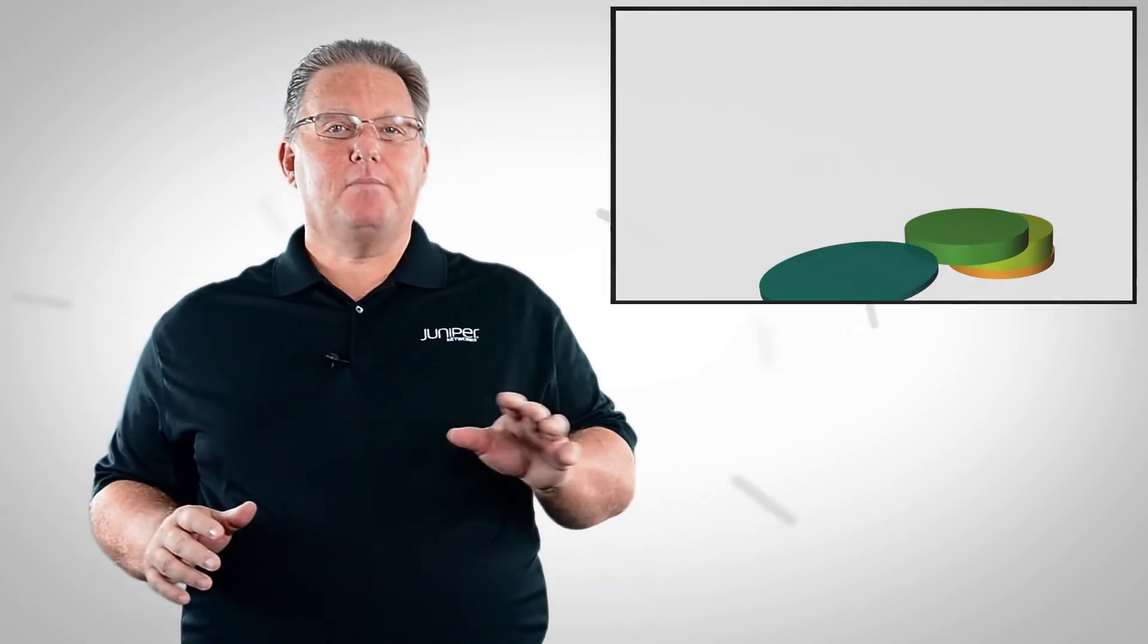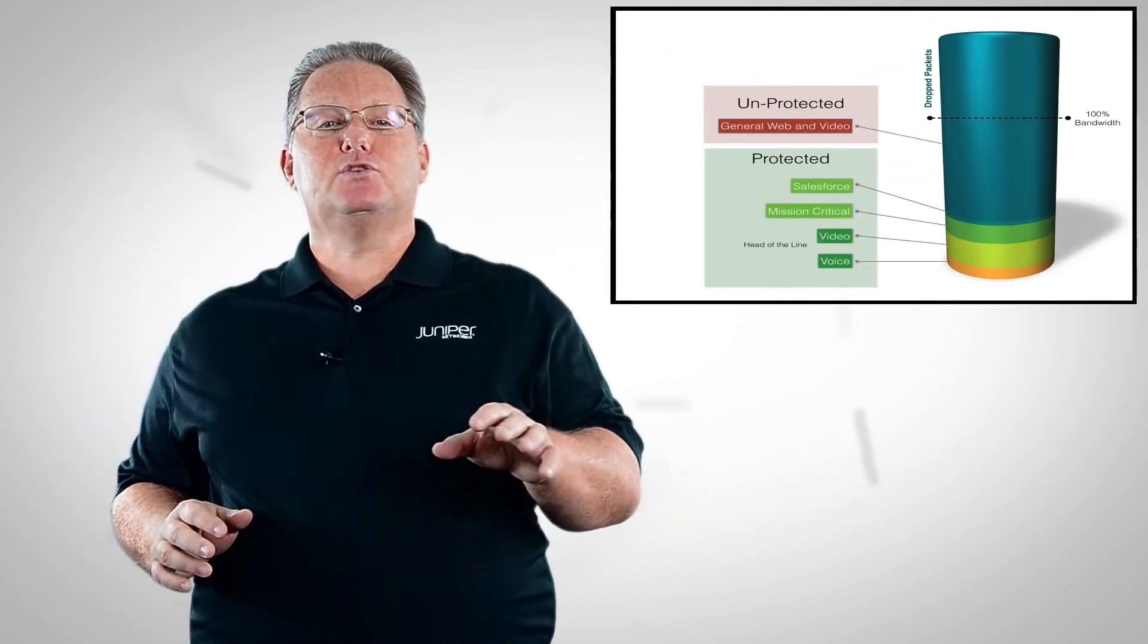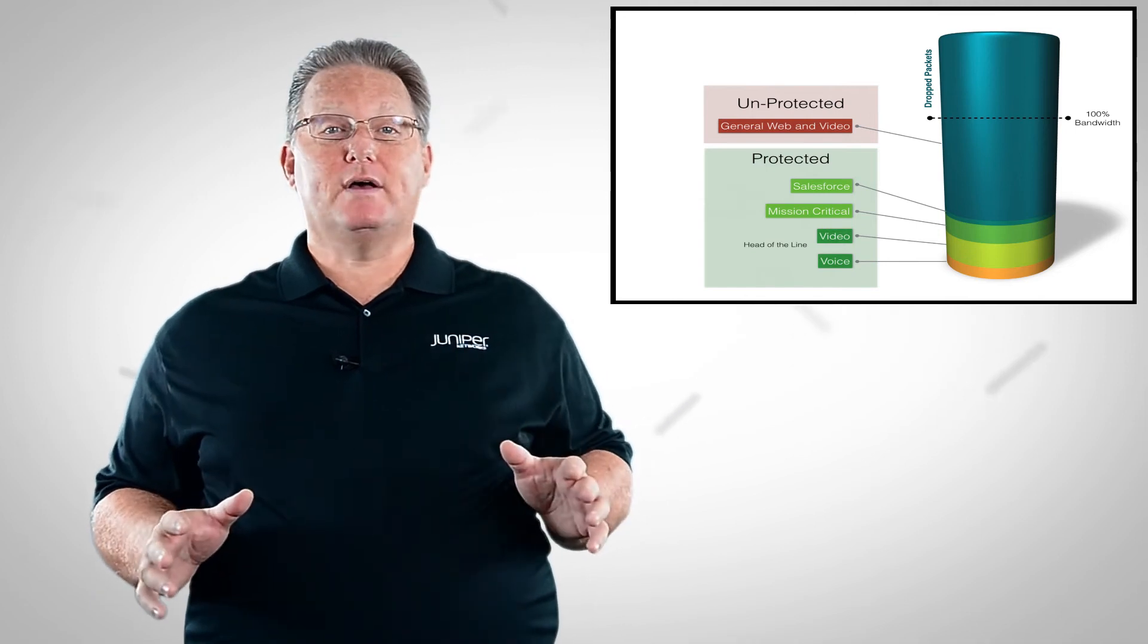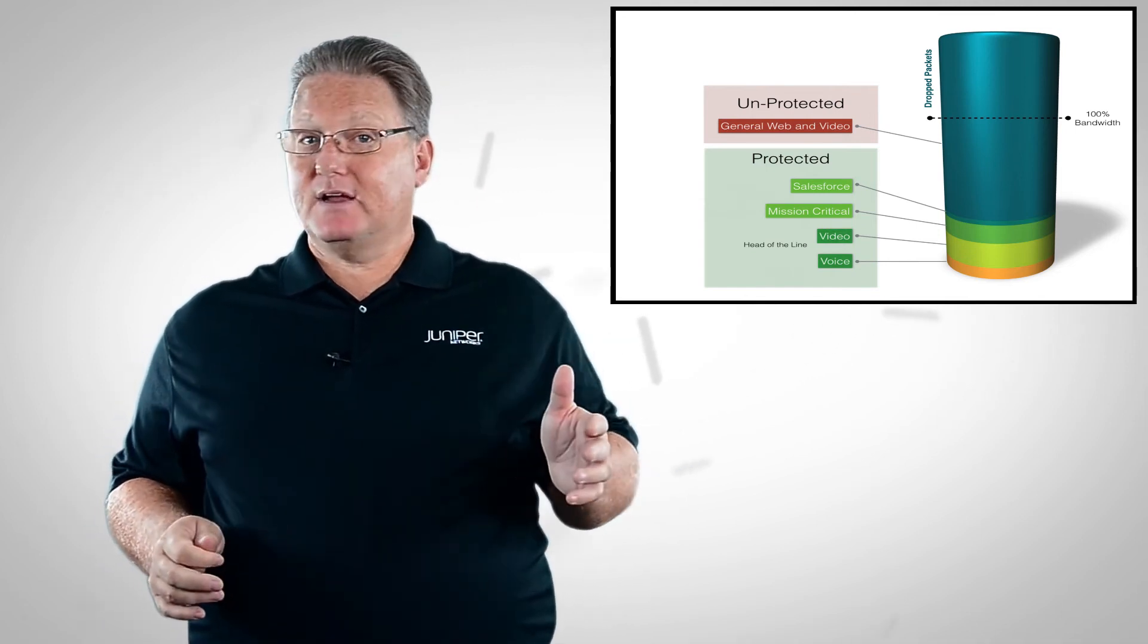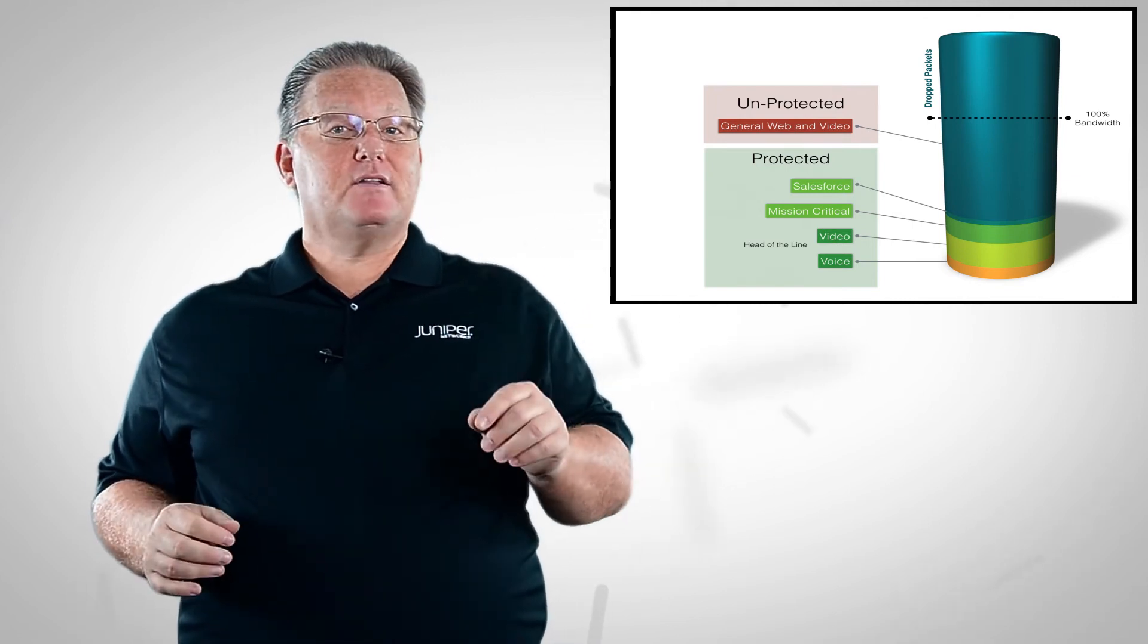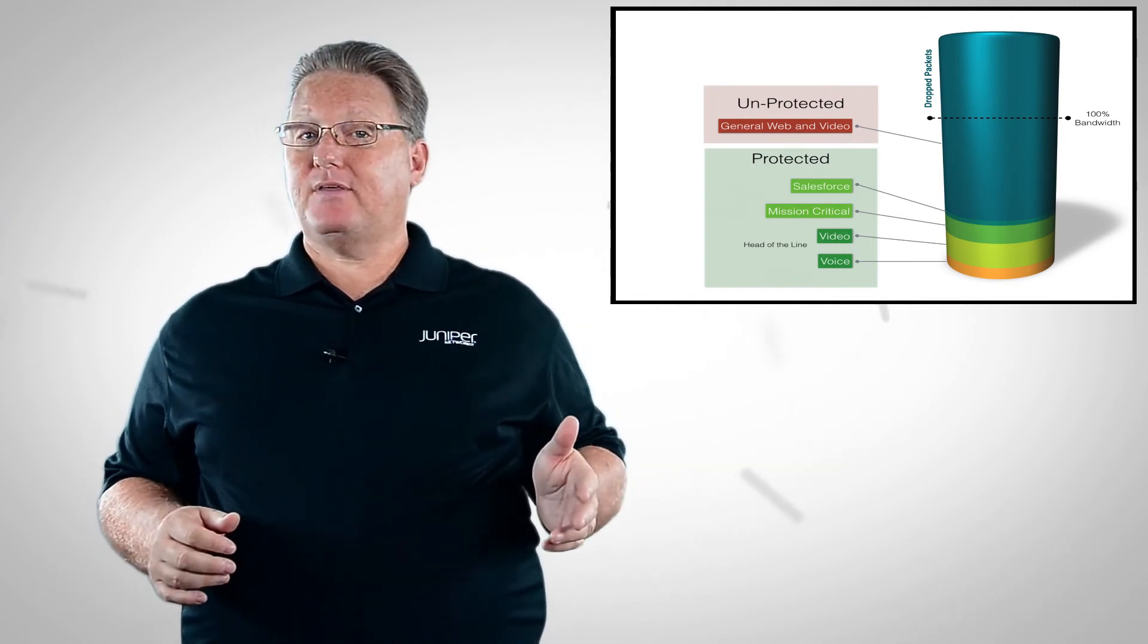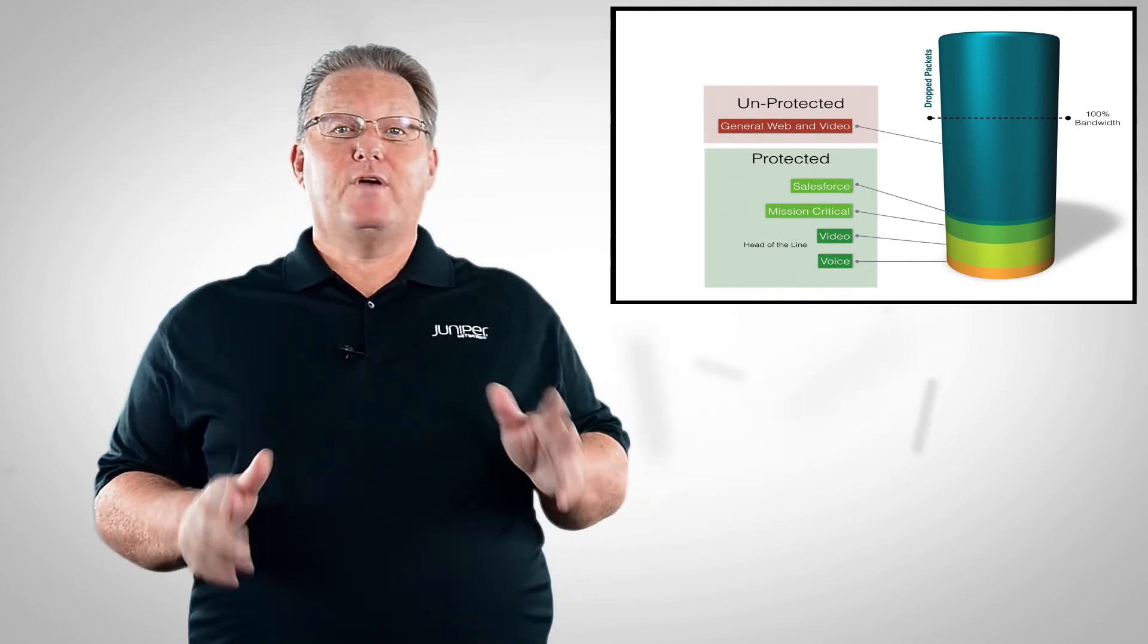Looking a little deeper, we know that voice and video are sensitive to both delay and packet loss. So these need to get to the head of the line during congestion. For mission critical apps and salesforce.com, we really just need to ensure that we reserve adequate bandwidth. So without spending a penny, we can implement a solution leveraging quality of service, or QoS, to ensure that our business critical traffic is protected during congestion. This policy should be applied to both path A and path B. So in the event of a failure, either path can continue to support your business critical applications without any degradation.